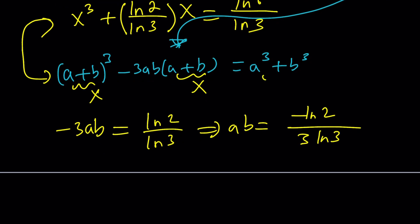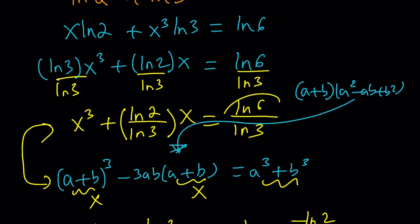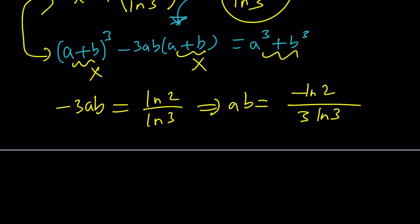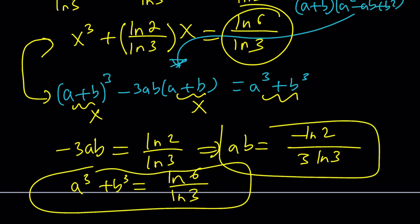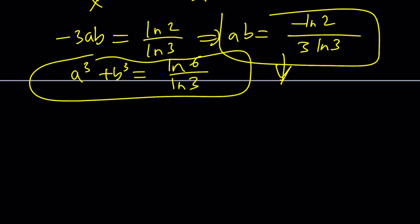And then compare these two equations. In order for this to be true for all x values or for the x values we're looking for, basically the coefficient of x's must be the same. So these are two polynomials that are identical. So the coefficient of x is ln 2 over ln 3 and on the right-hand side, I mean at the bottom, it's negative 3ab. So these should be equal. From here, ab becomes negative ln 2 over 3 ln 3.